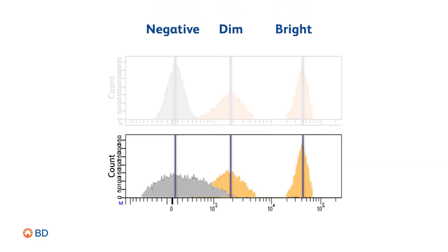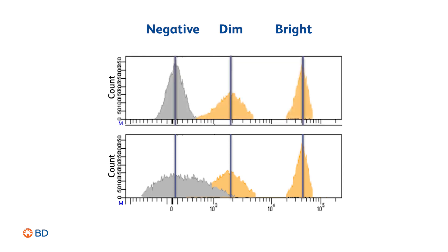Here, in the bottom panel, the spread of the negative population is coming from spillover from a different fluorochrome. This effect can be problematic as it makes population resolution harder to achieve.